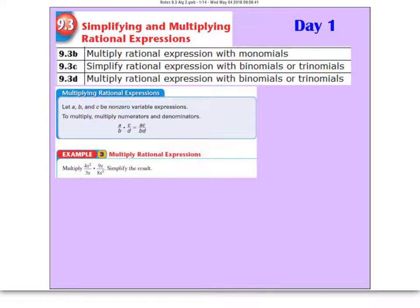Remember, when you multiply fractions together, you just multiply straight across. So we can actually rewrite this as 4x squared over 3x and we just times it by the 9x and it's 8x to the 5th.